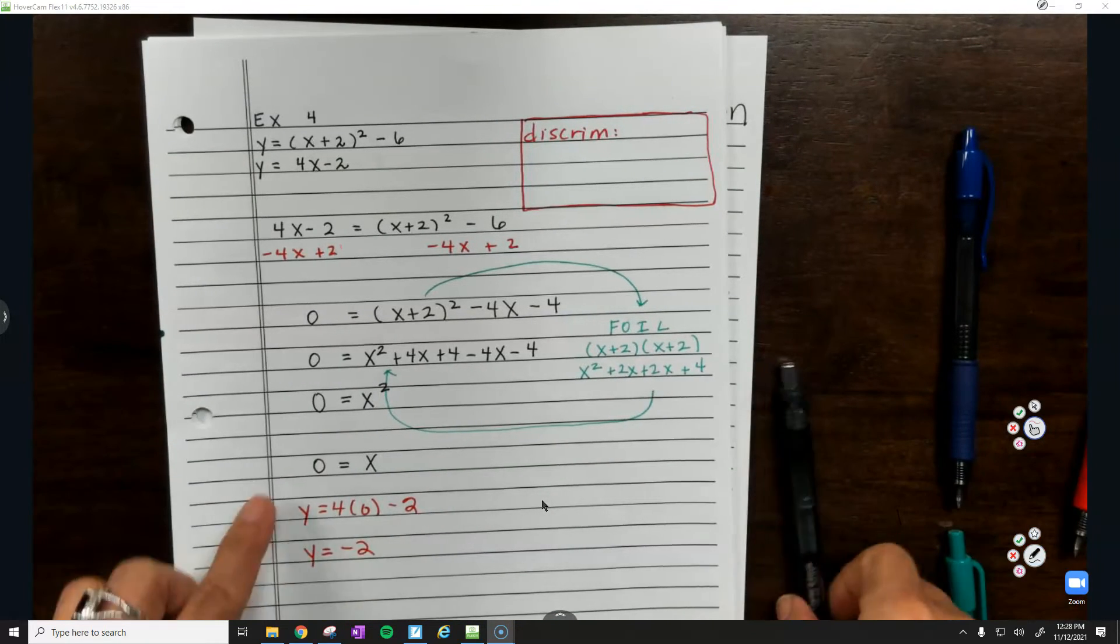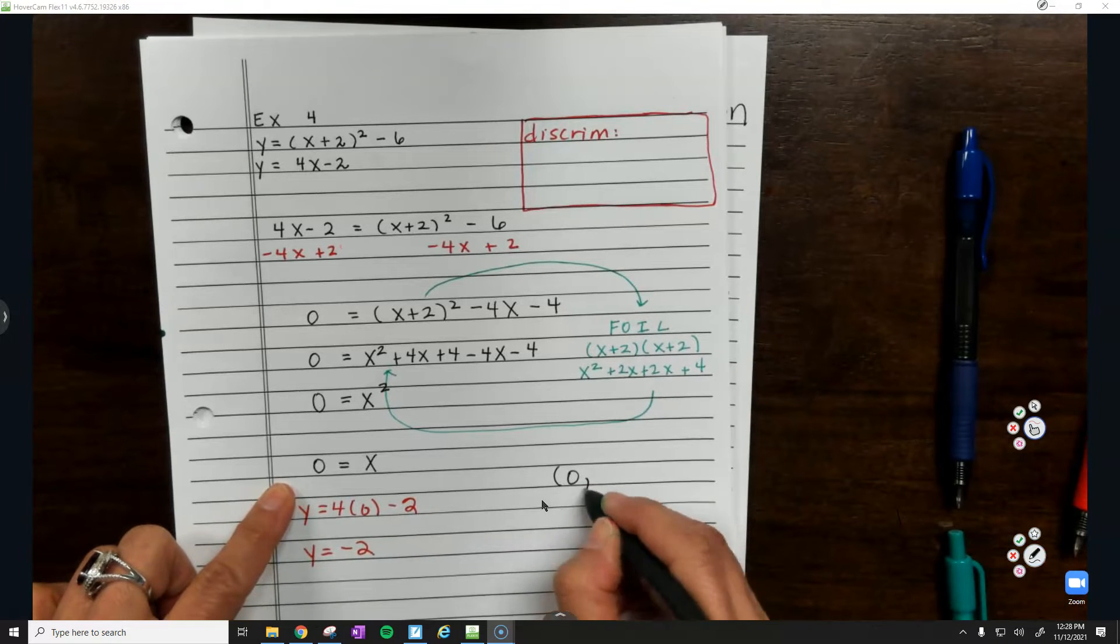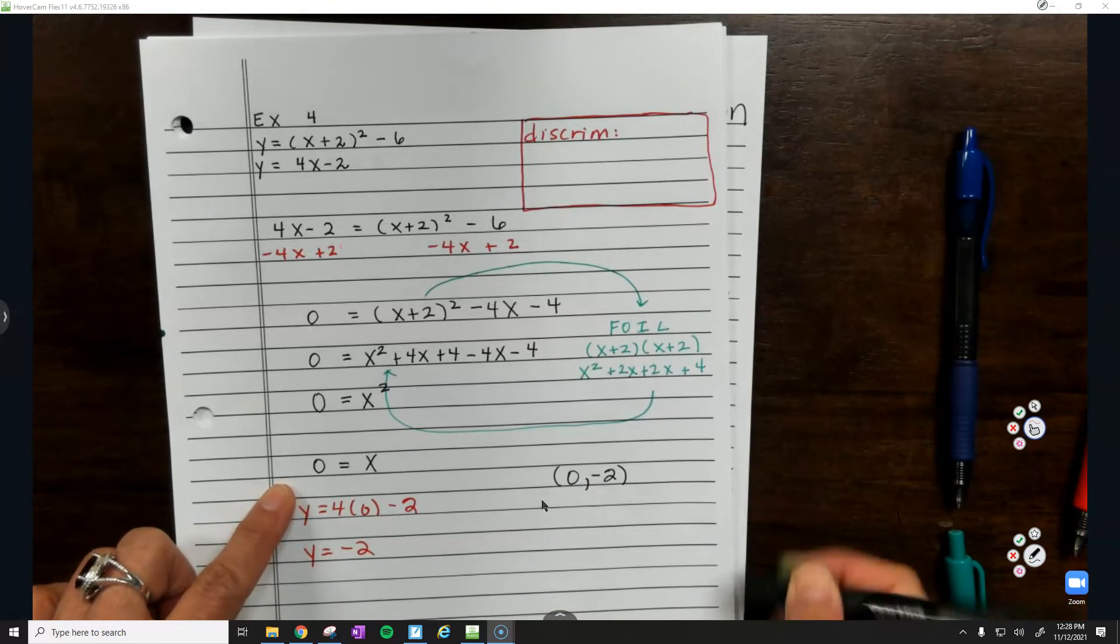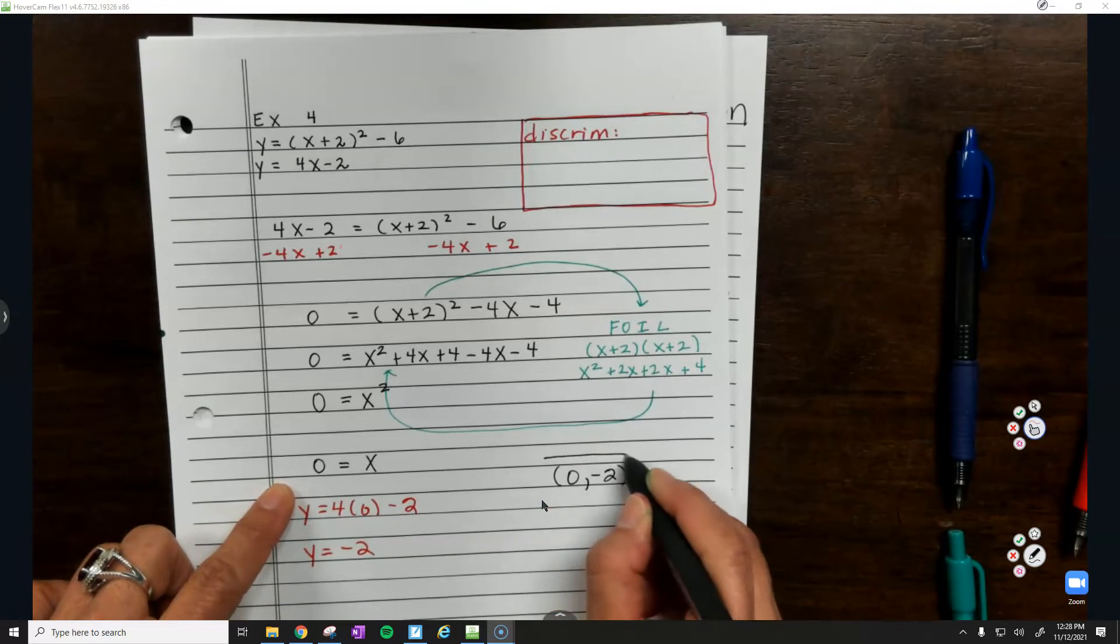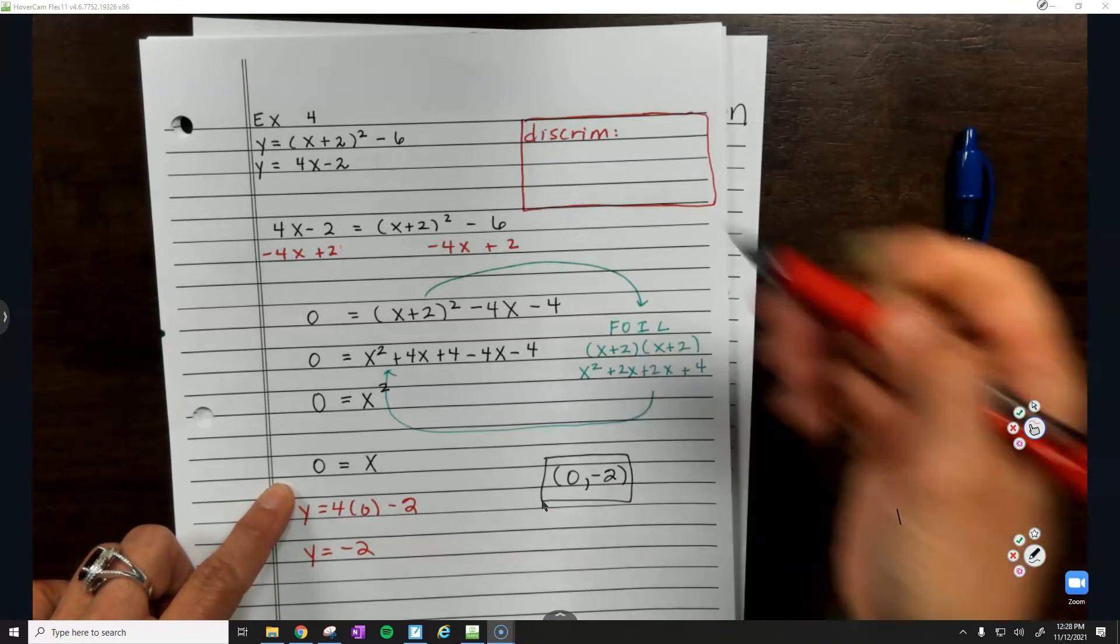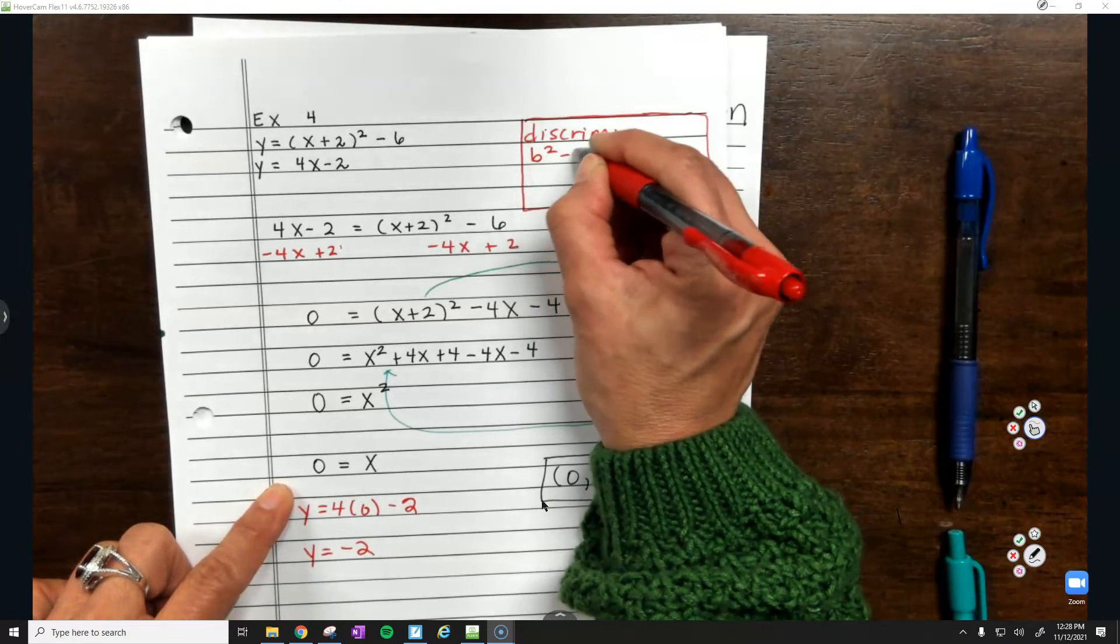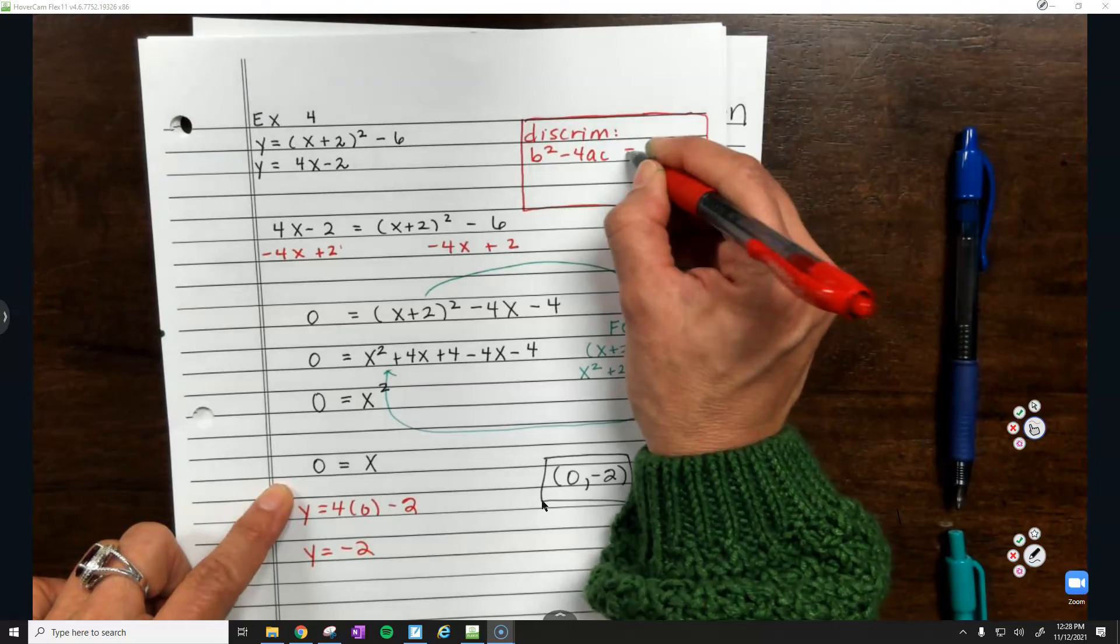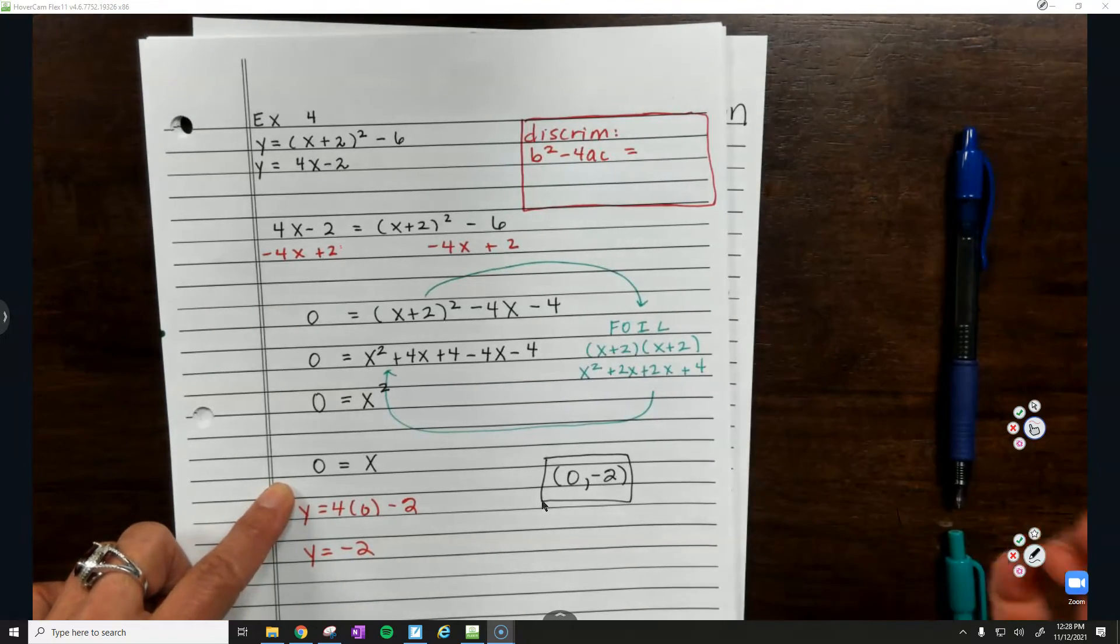Don't forget, you have to write your answer as an ordered pair. How many solutions do we have here? Yes, we do have one. So b² minus 4ac has to equal what? Zero.